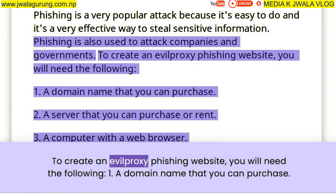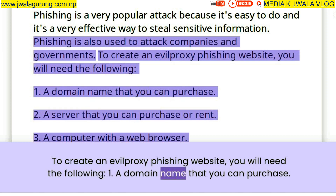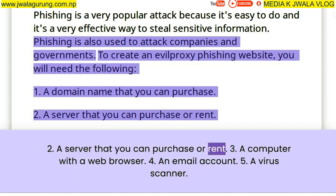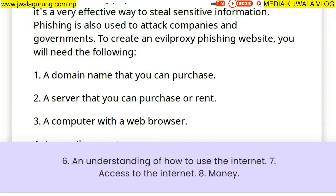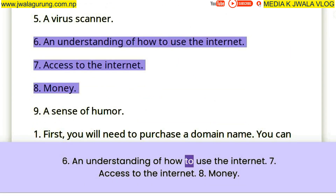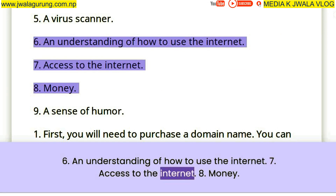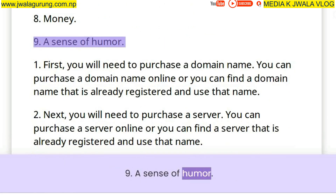To create an evil proxy phishing website, you will need the following: 1. A domain name that you can purchase. 2. A server that you can purchase or rent. 3. A computer with a web browser. 4. An email account. 5. A virus scanner. 6. An understanding of how to use the internet. 7. Access to the internet. 8. Money. 9. A sense of humor.